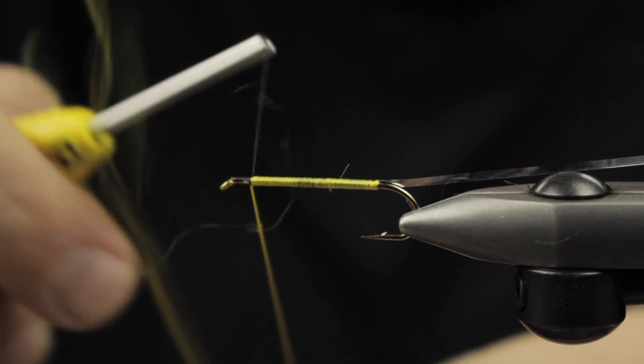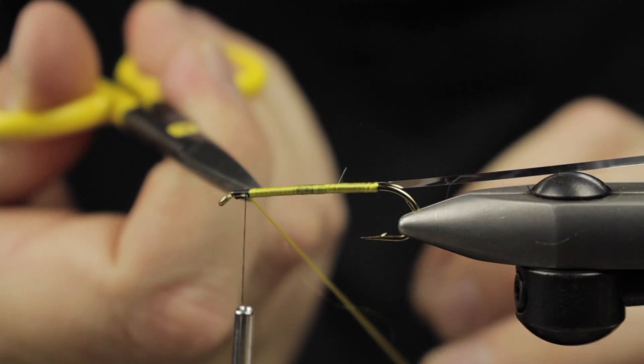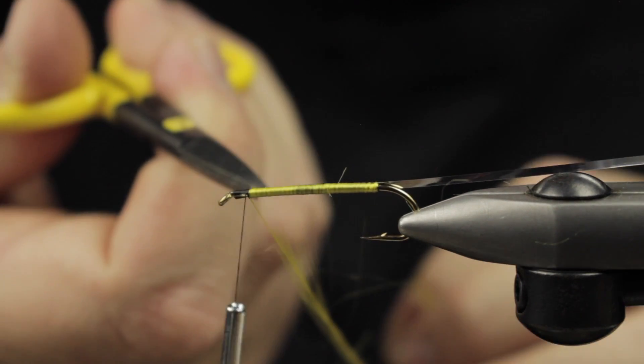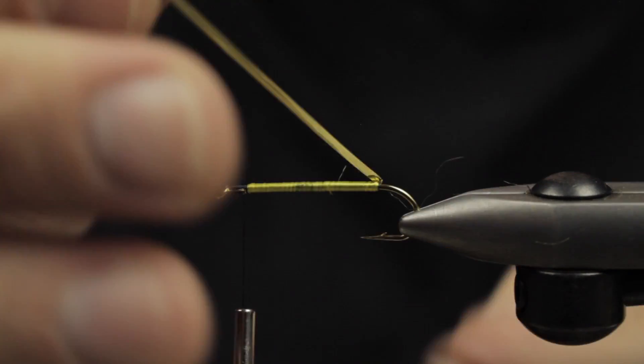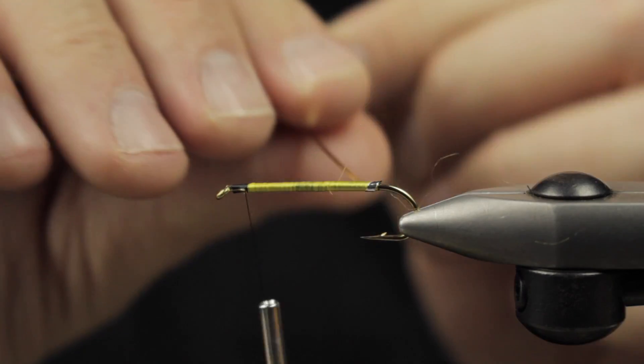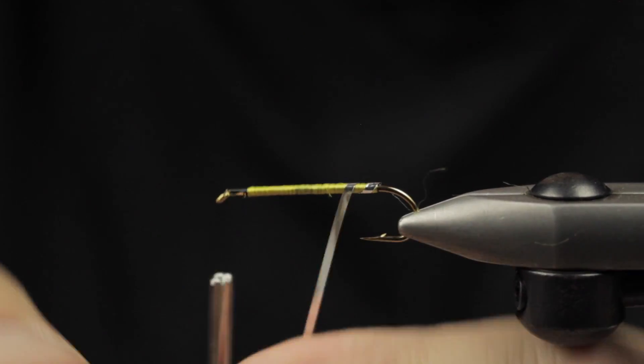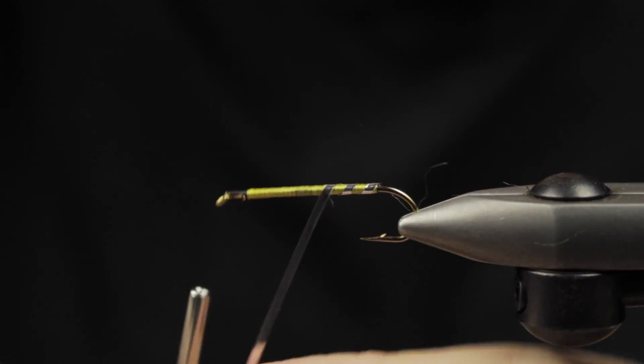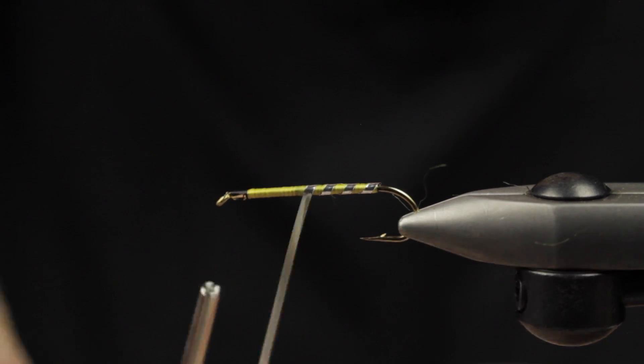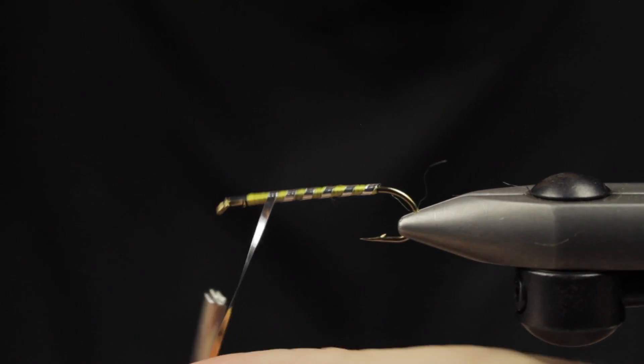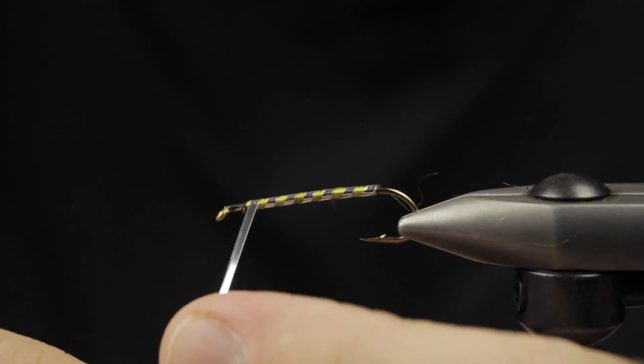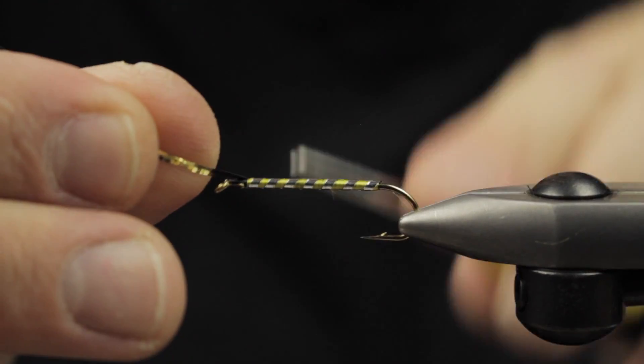Once we get it secured in there, we'll go ahead and really lock it in place and trim off all the excess. Next up we're going to take our tinsel and wrap forward. I just like to call this a barber pole, but really we're just segmenting the body, trying to keep our wraps as equal as possible.